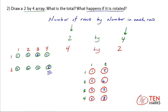In this array the total was eight, and in this array the total is also eight. So rotating the array doesn't change the total number — it only changes the organization. And remember, when you name an array, you name the number of rows by the number in each row. Thanks for watching.